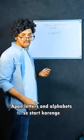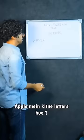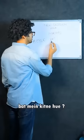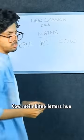Let's start with letters and alphabets. A is for Apple. How many letters are in Apple? 5. B is for Bat. How many letters are in Bat? So, you tell me how many letters are in the country? 13.